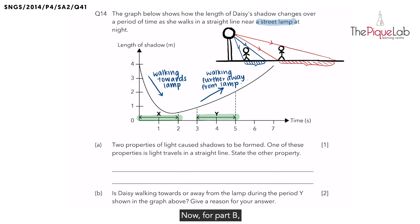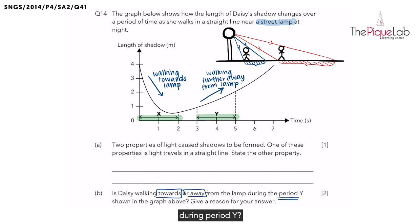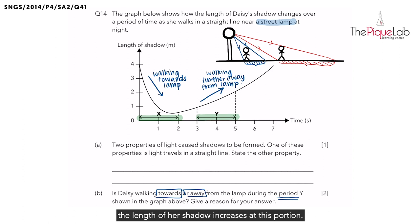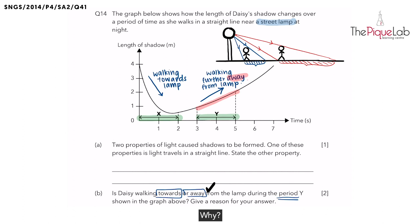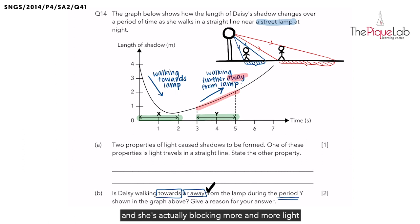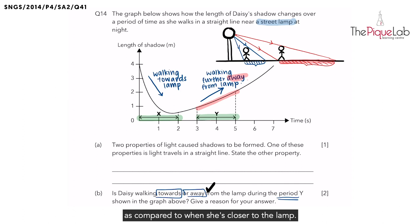For part B, they ask whether Daisy is walking towards or away from the lamp post during period Y. During period Y, we noticed that the length of her shadow increases. So if the length of the shadow is increasing, we have established that she is walking away from the lamp post. The answer would be: Daisy is walking away. Because based on the graph, the length of the shadow is increasing, showing that she's walking further and further away and blocking more and more light from the lamp. That's why the length of the shadow is much longer compared to when she's closer to the lamp.